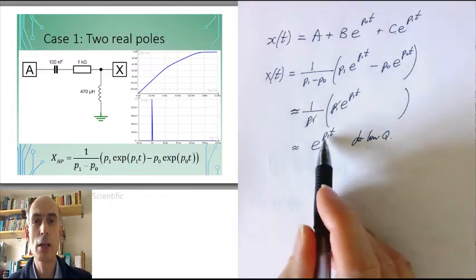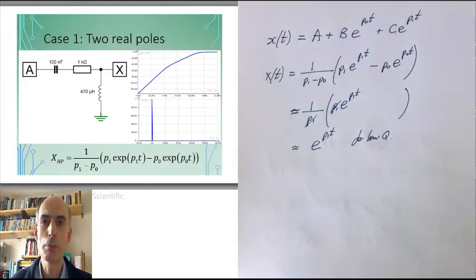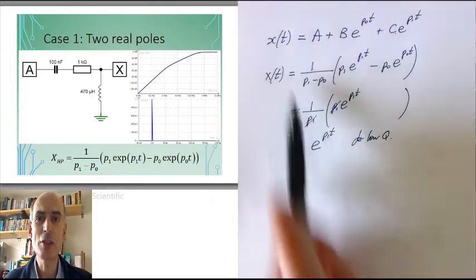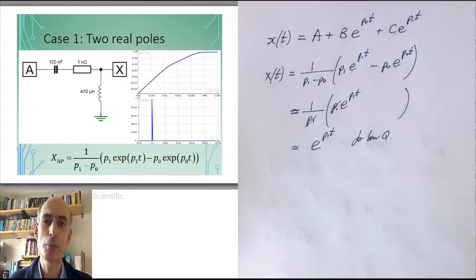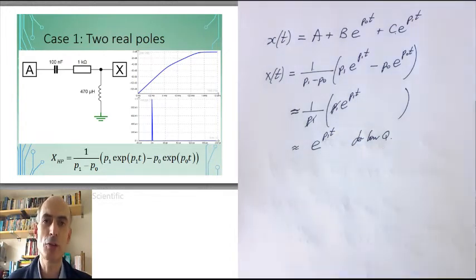And that's the first-order response due to the faster pole, the pole with the higher break frequency. So once again, in this extreme case, we have got something that's behaving like a first-order system. It's just this time the first-order system is characterized by the pole with the higher frequency breakpoint.